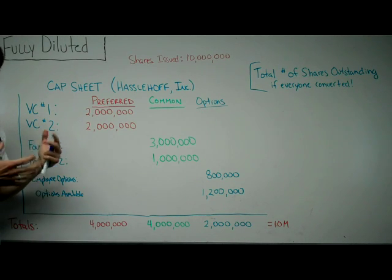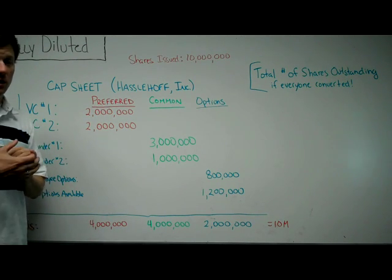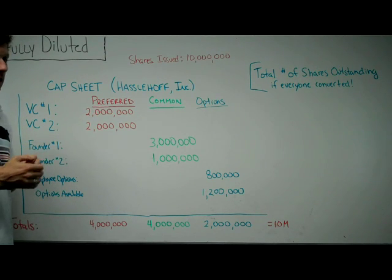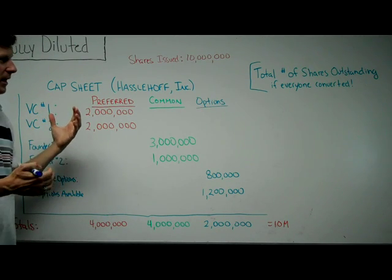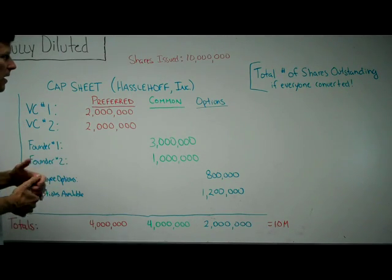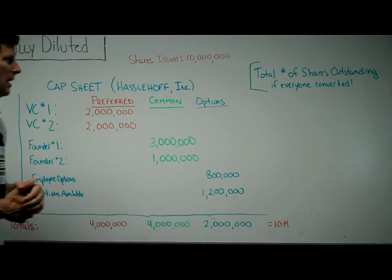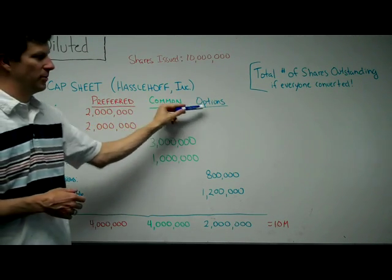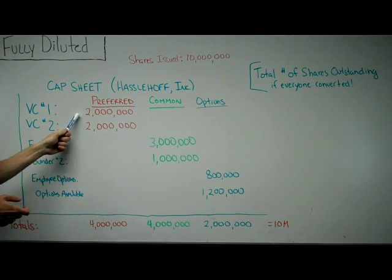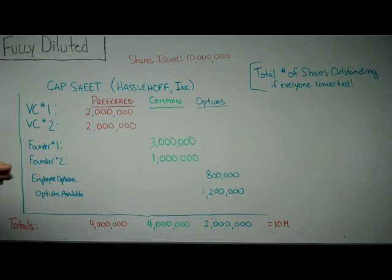You usually want to think about your ownership percentage in terms of the fully diluted number of shares. We're going to talk about a fictitious company called Hasselhoff Incorporated — let's say David Hasselhoff started a company to sell his merchandise in Europe. There have been 10 million shares issued by the corporation. I've split this up into preferred stock, common stock, and options outstanding. VC investor number one has two million shares and investor number two has two million shares of preferred stock.